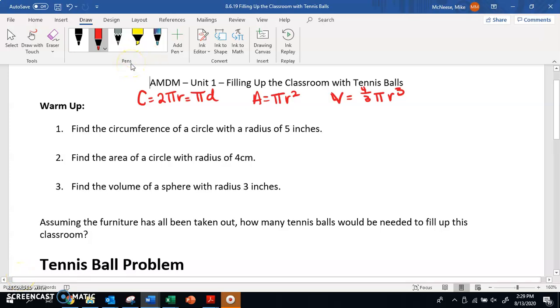All right, so number one says find the circumference of a circle with a radius of 5 inches. I always underline all the info that it gives me, so I know radius is 5 inches. And now I'm trying to find the circumference. So circumference formula is C equals 2πR. Well, I know what R is. R is 5, right? So I can say circumference is equal to 2π times 5. So 2π times 5, that's the same thing as 10π, because 2 times 5 is 10. 10π is the same thing as 31.42 inches.